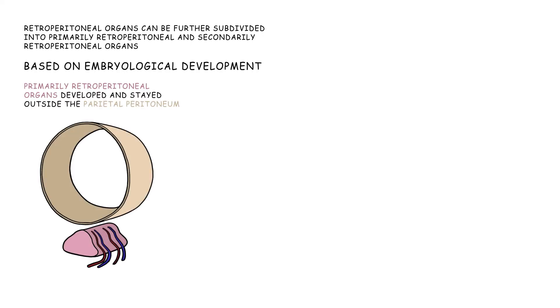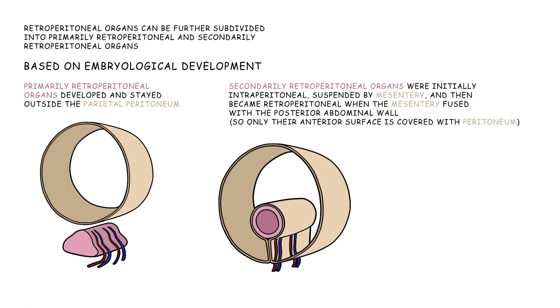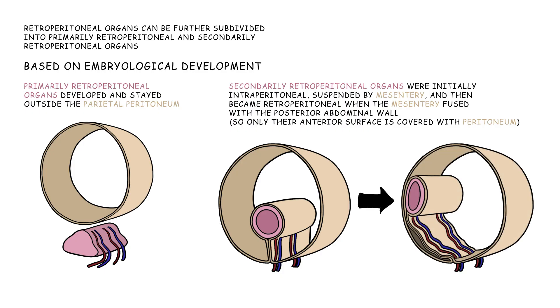Retroperitoneal organs can be further subdivided into primarily and secondarily retroperitoneal organs based on embryological development. Primarily retroperitoneal organs developed and stayed outside the parietal peritoneum, while secondarily retroperitoneal organs were initially intraperitoneal, suspended by mesentery, and then became retroperitoneal when the mesentery fused with the posterior abdominal wall, so only their anterior surface is covered with peritoneum.